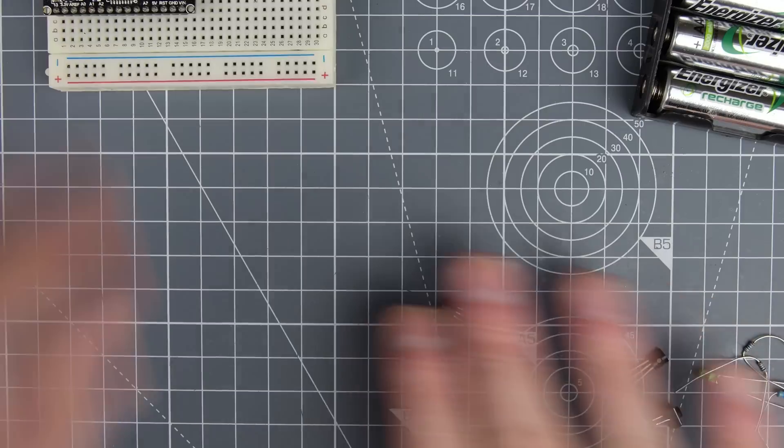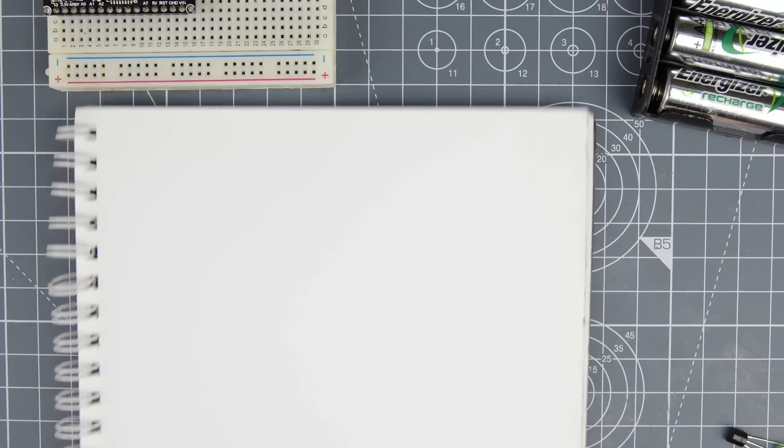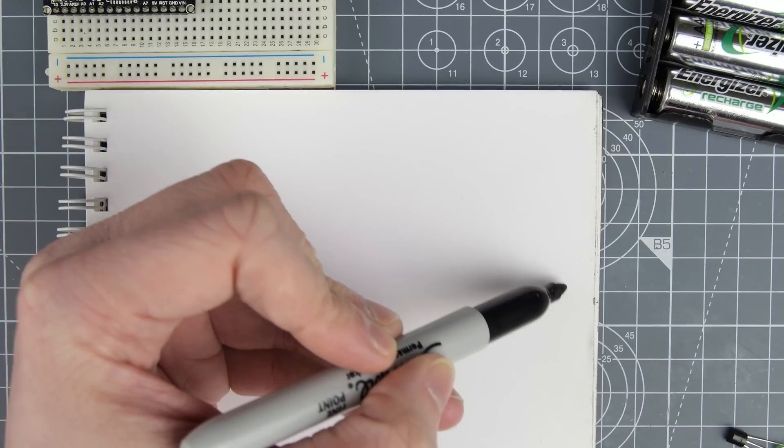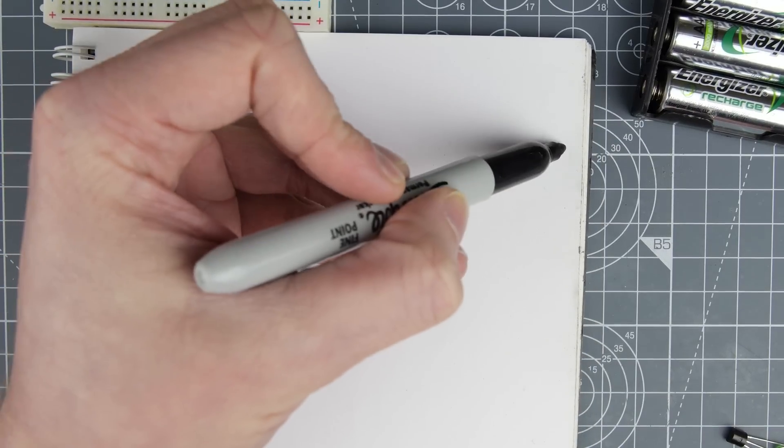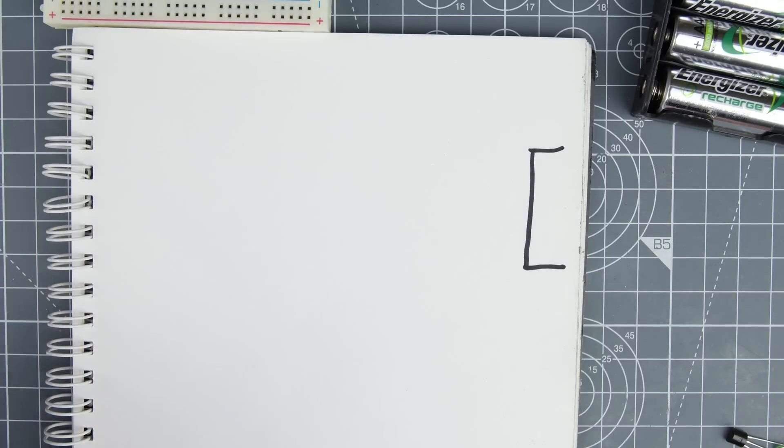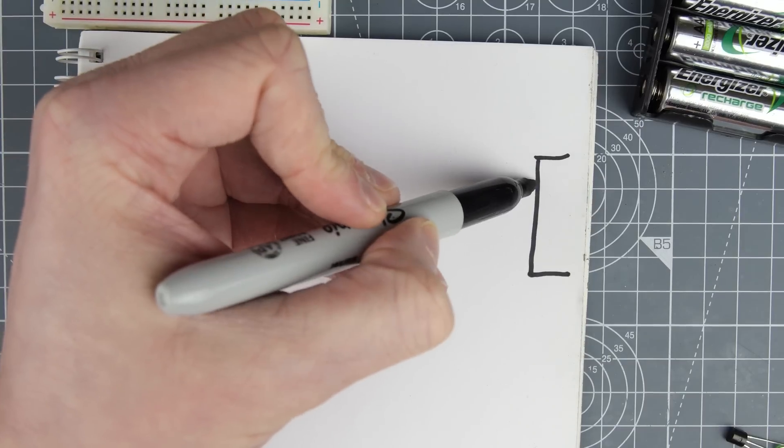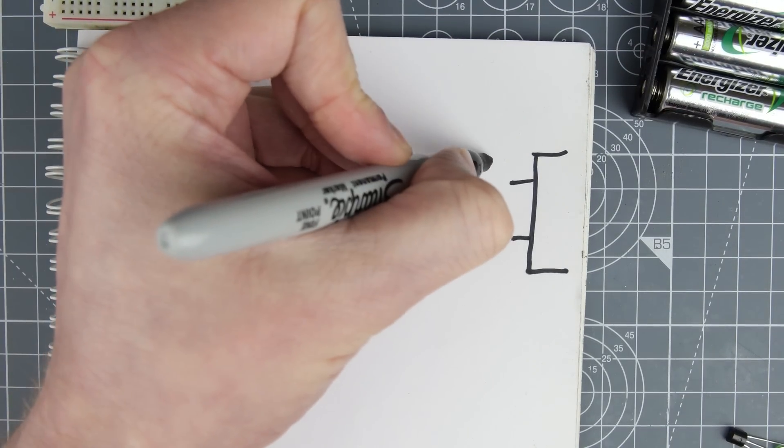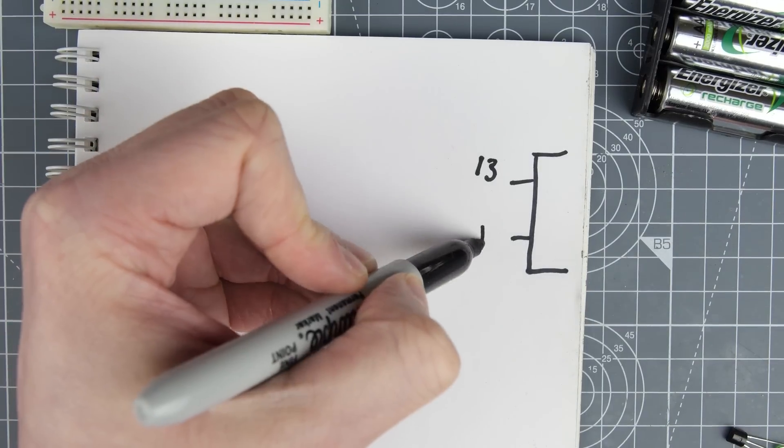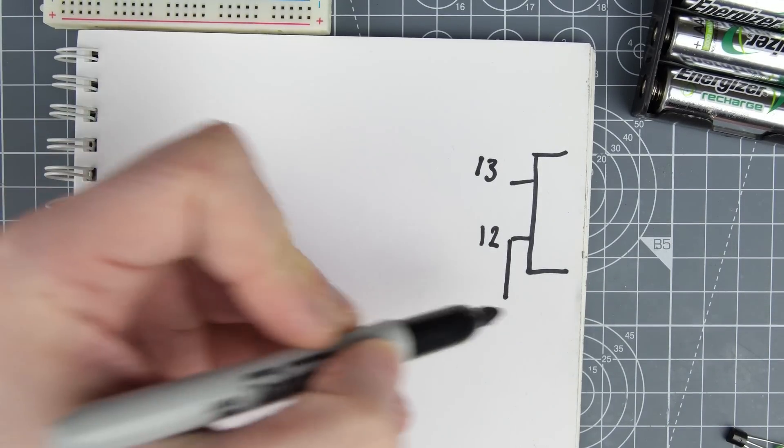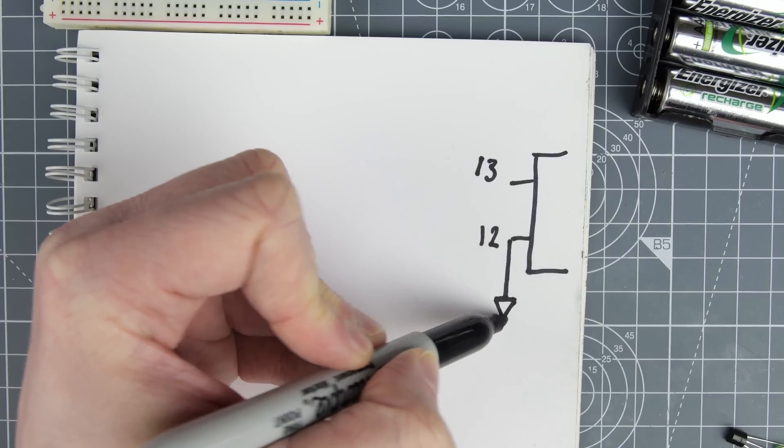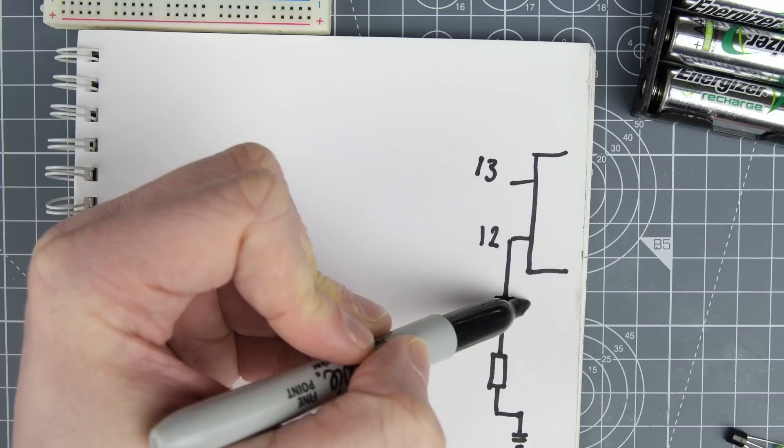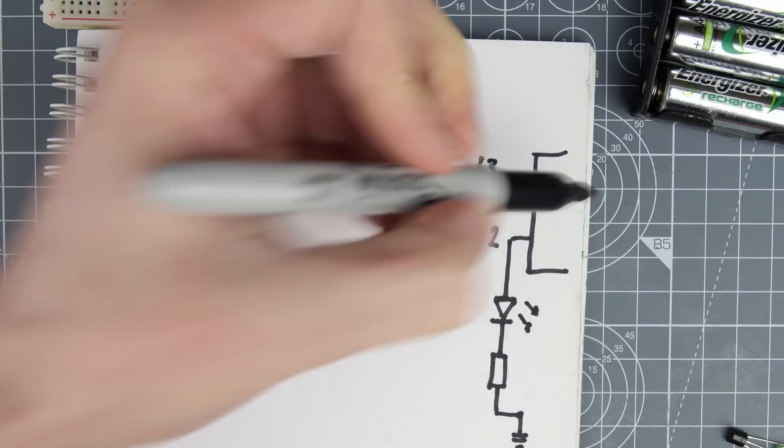So first off we're going to draw the schematic and make sure that we get everything right to start with and it's a relatively simple schematic. So we'll start off with our microcontroller shall we? So I'm not going to draw the whole thing, we'll just draw it as a little box at the side. So this is whatever microcontroller you have. In this case we're using an Arduino Nano.